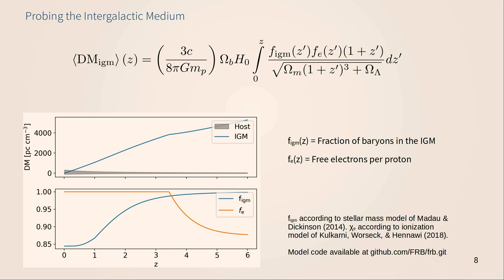In this one quantity we have probes of cosmology, the feedback history of galaxy formation, and the ionization history of the universe. Showing total DM versus redshift, the ionization fraction is shown in the orange line — around a redshift of three, the universe becomes fully ionized, including hydrogen and helium. At lower redshifts, more matter is being accreted or collapsed into galaxies, so the fraction in the IGM is dropping off. With low-redshift FRBs we can probe the IGM fraction, f_IGM, and with higher-redshift FRBs we can potentially probe the epoch of helium reionization, although that's a little more far-fetched for the future.